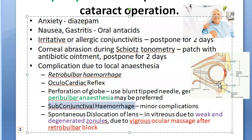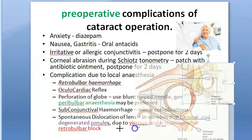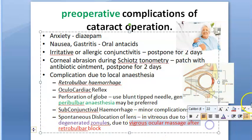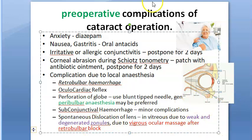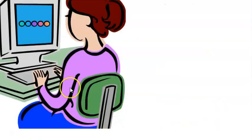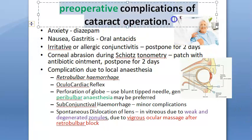Subconjunctival hemorrhage can also occur — that's a minor complication. Spontaneous dislocation of the lens can happen due to weak, degenerated zonules; the lens can go into the vitreous. This happens with vigorous ocular massage after retrobulbar block: the block is given, vigorous ocular massage is done, and due to weak degenerated zonules the lens gets dislocated. These are all the pre-operative complications.